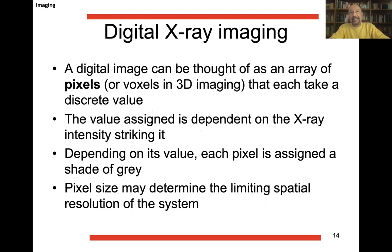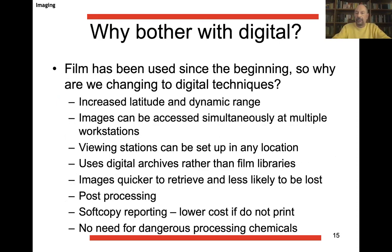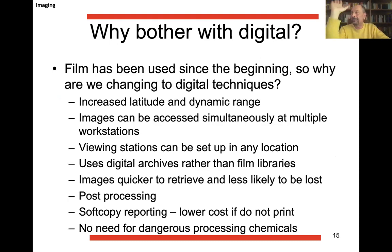Films are very little used now in clinical practice; digital x-ray imaging is taking over, based on pixels in 2D or voxels in 3D. The value of each pixel is given depending on the x-ray intensity, and you assign a shade of gray to each pixel to get a 2D image. Why bother with digital? Everything digital is much easier and faster — you don't need to develop the film; everything is automatic and you immediately see the image on your computer screen.